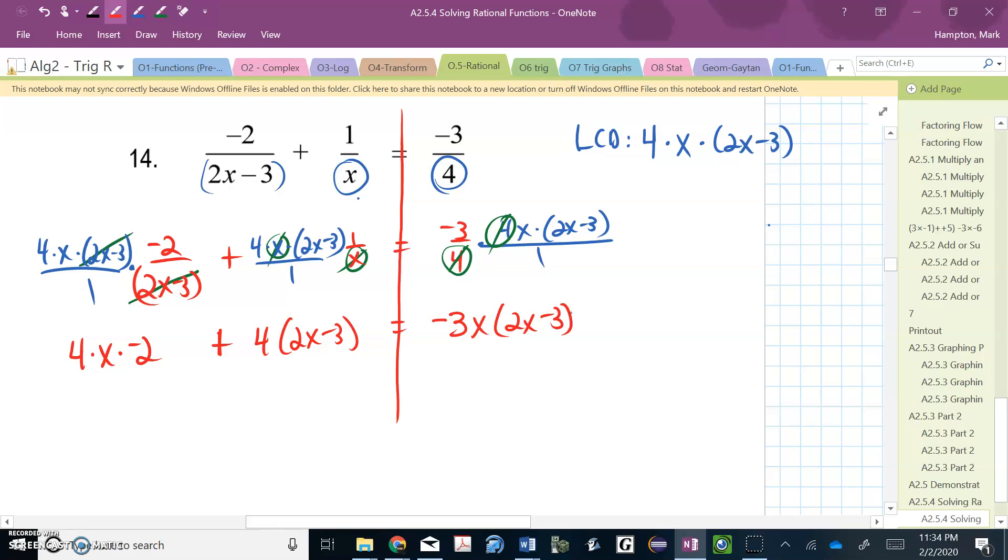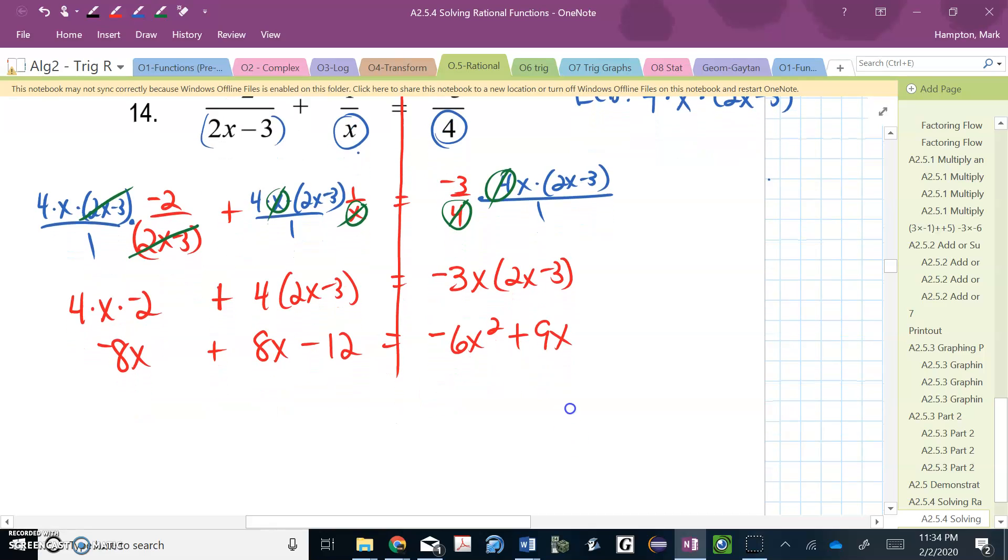It's starting to feel like we might end up with another quadratic on this guy. So this becomes a negative 8x. This becomes a positive 8x minus 12. This becomes negative 6x squared plus 9x. Now we've got to start combining some like terms. So these guys are going to cancel. I'm left with, I'm going to move this 12 over to the other side. And I get 0 equals negative 6x squared plus 9x plus 12.